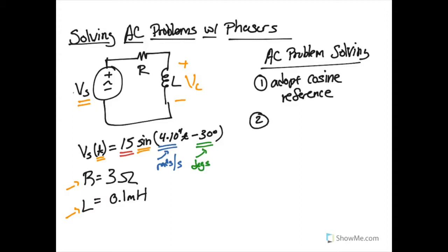Step number two is going to be to transform all of our components into their phasor domain equivalent. So transform into phasor equivalents. And then once they're in their phasor equivalents, we can apply all of the circuit analysis techniques that we've used before.